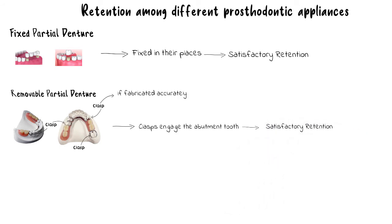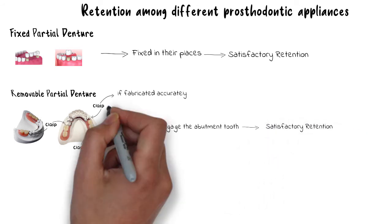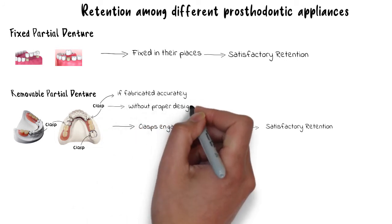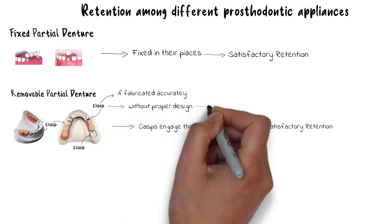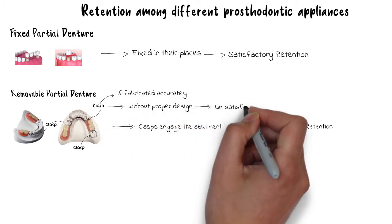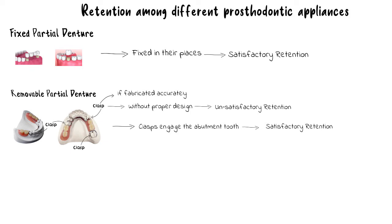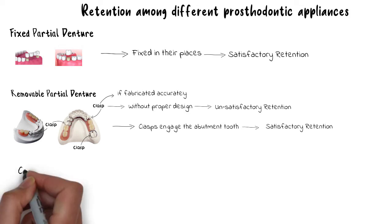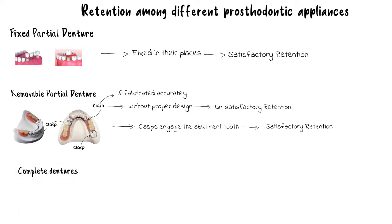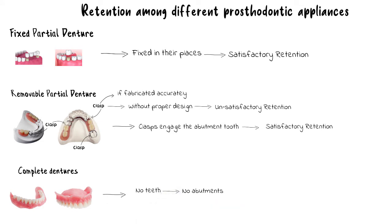That is, if they are accurately fabricated. Without accuracy, even with clasps, a denture can still struggle for adequate retention. Therefore, accurately fabricated clasps are very crucial for the retention of a removable partial denture. On the other hand, in cases of complete denture, since there are no natural teeth present in the mouth to engage with the clasps, making a clasp for a complete denture is not an option.